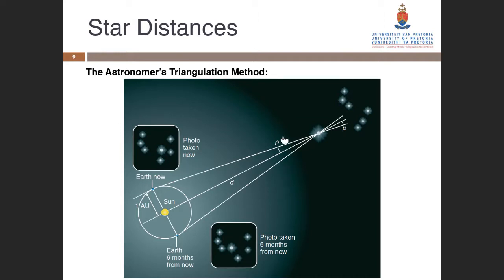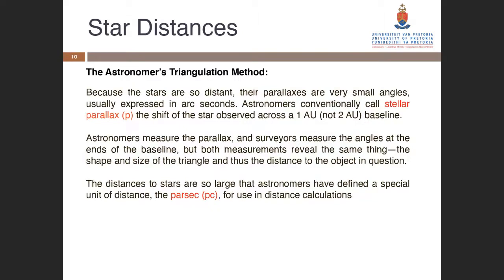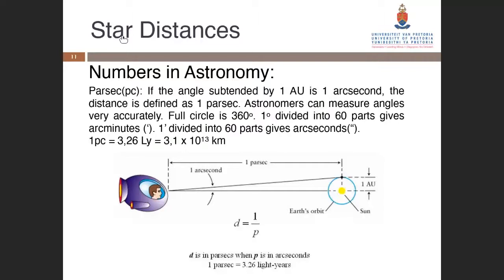We can do this with stars that are relatively close, but stars that are extremely far away need a new method. In astronomy, when the AU becomes too small and the light year becomes too small, we start using a unit of measurement called the parsec. The parsec is just basic math — if the angle subtended by 1 AU is 1 arc second, the distance is defined as 1 parsec. A full circle is 360 degrees, divided into 60 parts gives arc minutes, divided into 60 parts gives arc seconds. One parsec equals 3.26 light years.